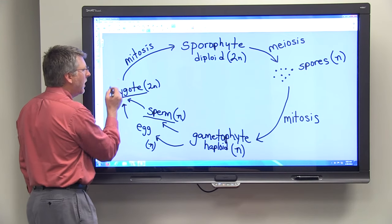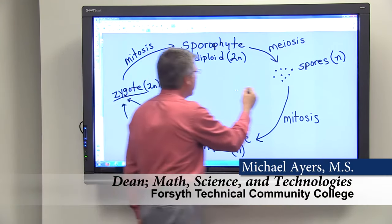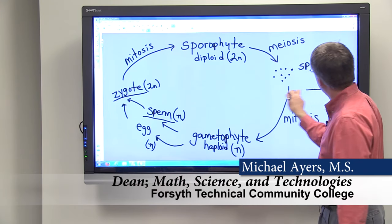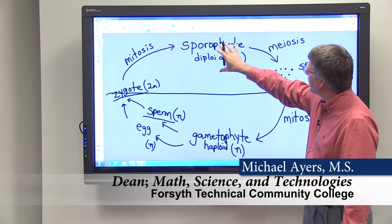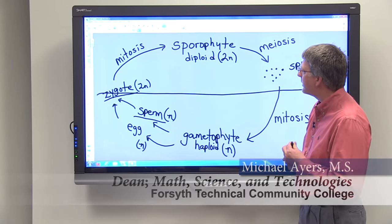And if I drew a line across, you can see that we alternate between the sporophyte generation and the gametophyte generation.